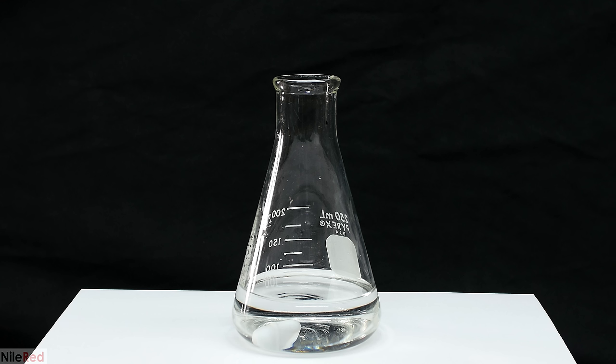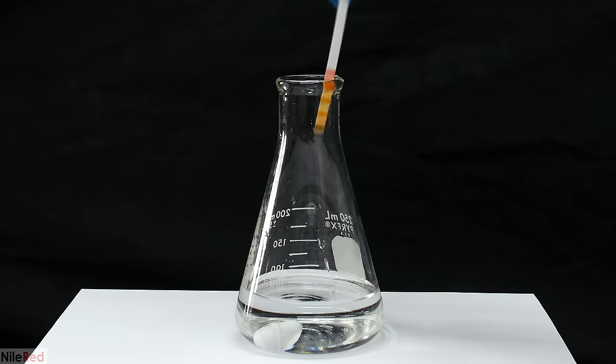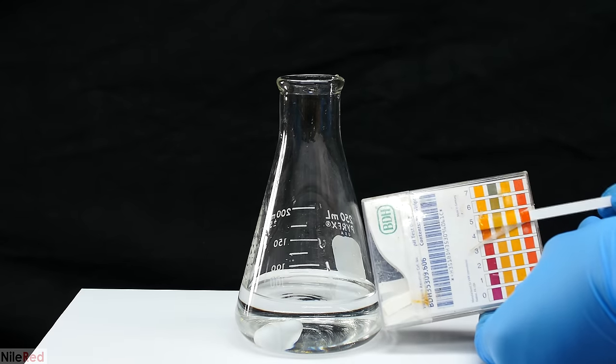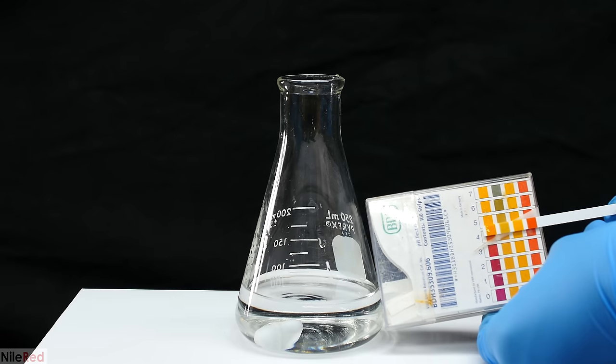According to the paper that I got this procedure from, a pH of 5 was extremely important. When they didn't use a buffer and the pH was allowed to change, they found that the reaction actually took a different pathway and led to the wrong product. Anyway, just for fun, I used a universal pH strip to verify that we had a pH of about 5.